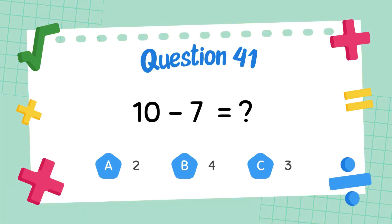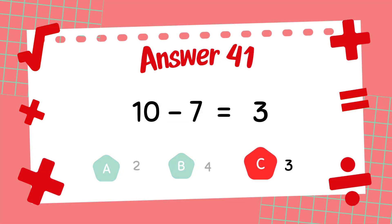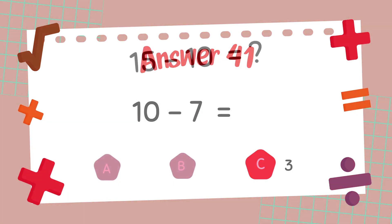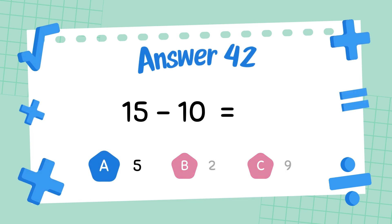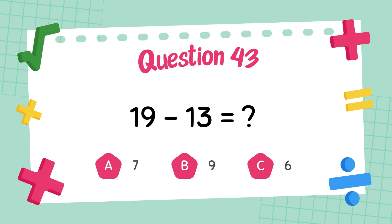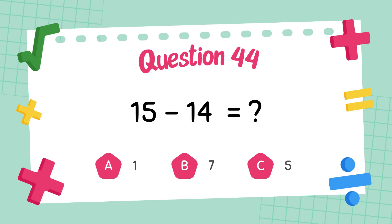What is 10 minus 7? The answer is 3. What is 15 minus 10? The answer is 5. What is 19 minus 13? The answer is 6. What is 15 minus 14? The answer is 7.